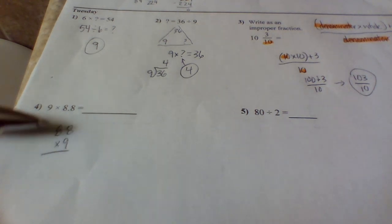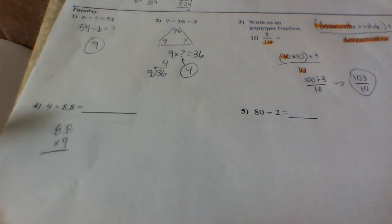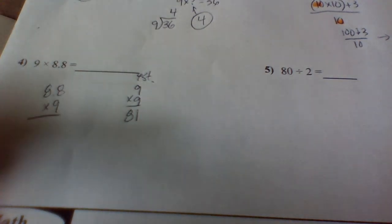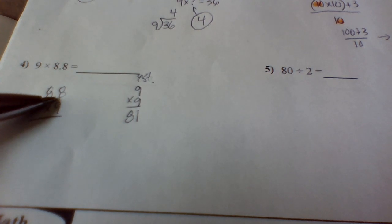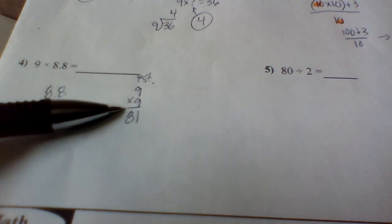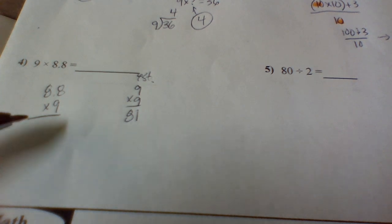The next thing we need to do is make an estimate. Well, I know from my facts, 8.8 is closest to 9. And I know 9 times 9 is 81. I took my 8.8 because I have my 8 and 8 tenths. So I'm rounding up to 9. And I know 9 times 9 is 81. So my answer should be pretty close to 81.